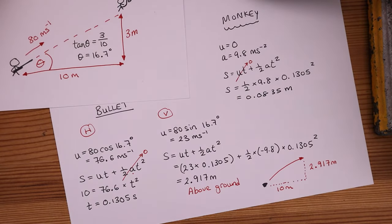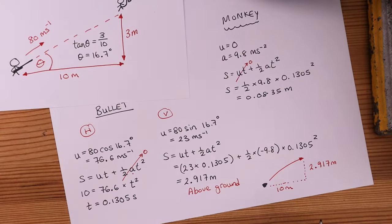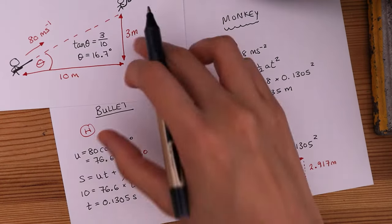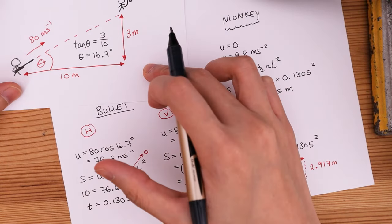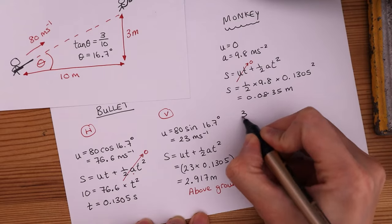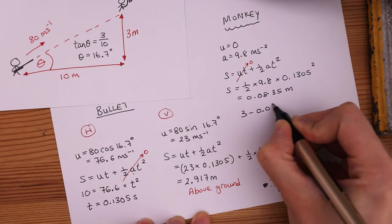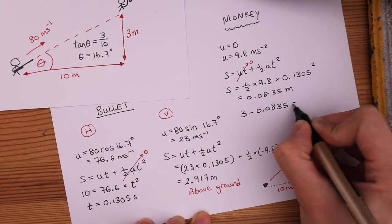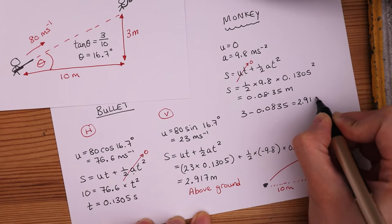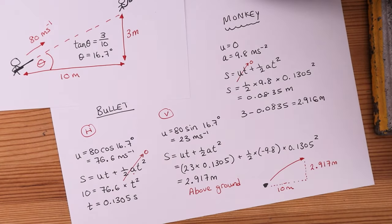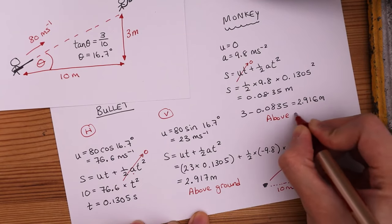If the height is 3 meters, if I want to find out how far above ground he's going to be, I need to do 3 minus 0.0835. That gives me 2.916 meters above ground.